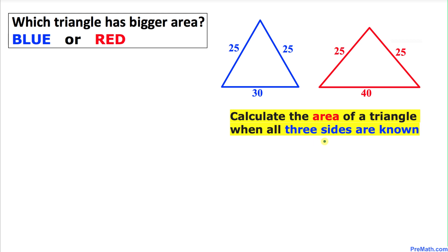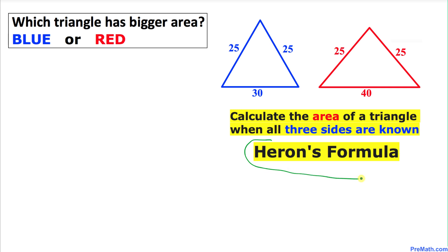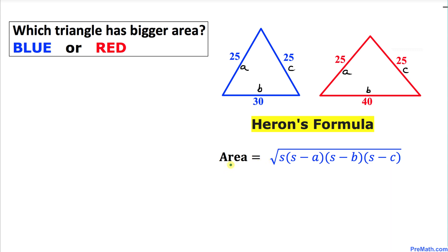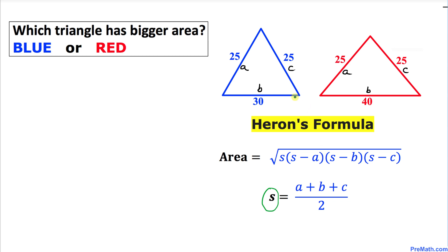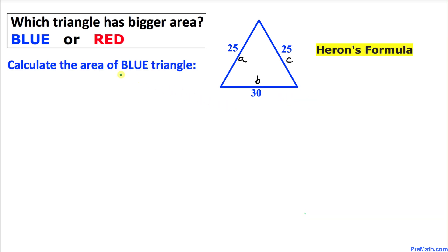Since all three sides are known, we can calculate the area of these triangles by using Heron's formula. This is very useful when all three sides are known. The area of the triangle can be calculated by taking the square root of S times (S minus A) times (S minus B) times (S minus C), where A, B, and C are the three sides of the triangle, and S is equal to the sum of these sides divided by 2.